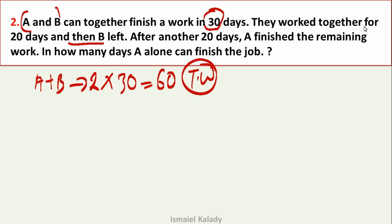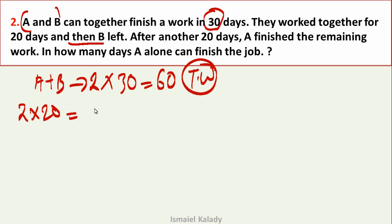A and B work together for 20 days. The total work is 60. Efficiency of A plus B is 2. In 20 days, the work done is 40. The efficiency of A alone is what we need to find.